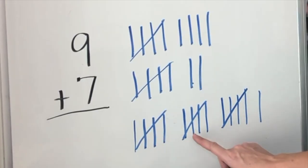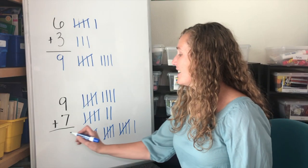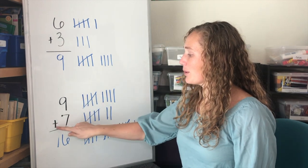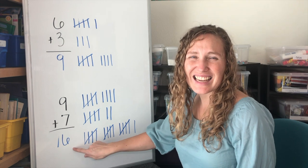Now we have three groups of five and one group of one. Let's count. Five, ten, fifteen, sixteen. Sixteen tallies. Nine plus seven equals sixteen.